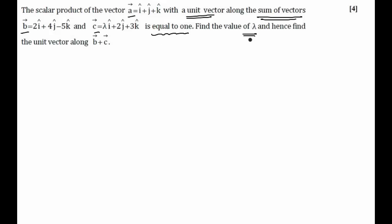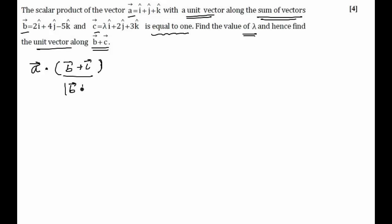Then, using that value of lambda, I have to find a unit vector along B plus C. So basically, I have to calculate: A vector taken as the scalar product with the unit vector along B plus C, which means I will have to divide by the magnitude of B vector plus C vector. This value is equal to 1 — that data is given to us.